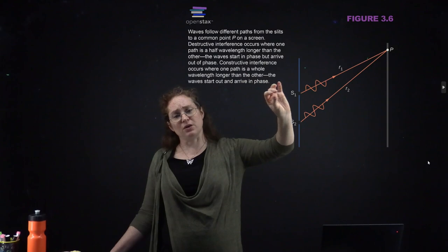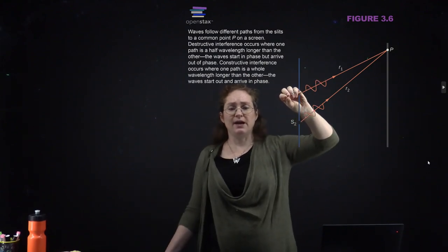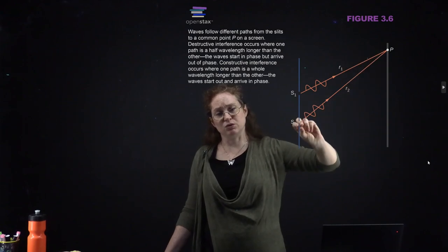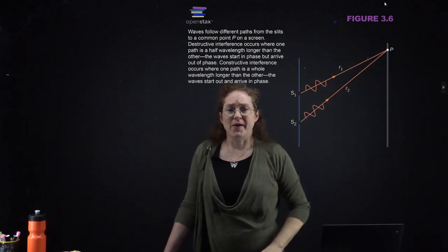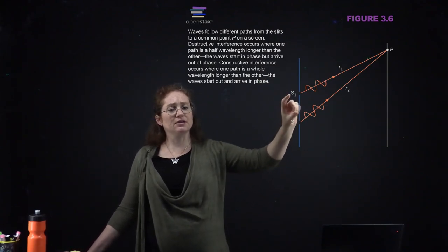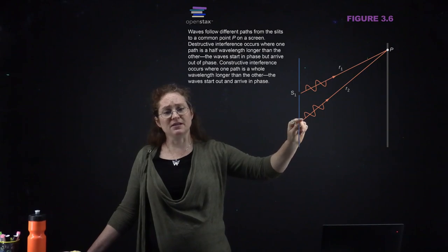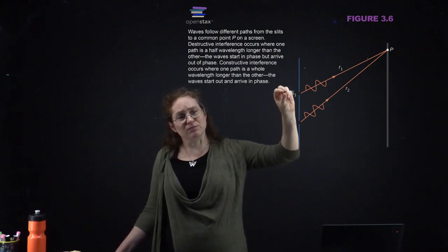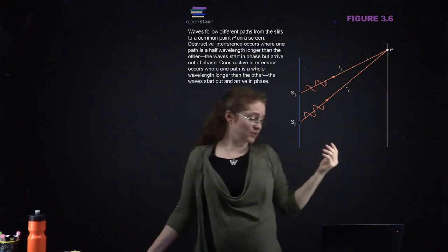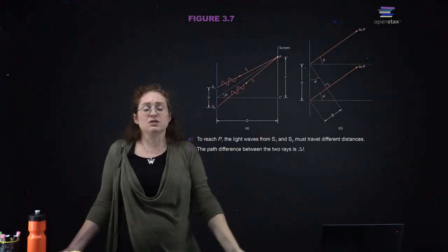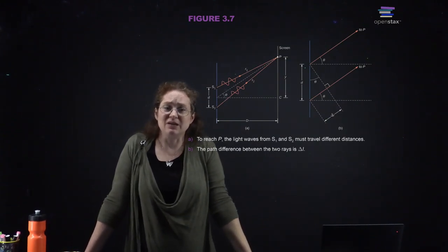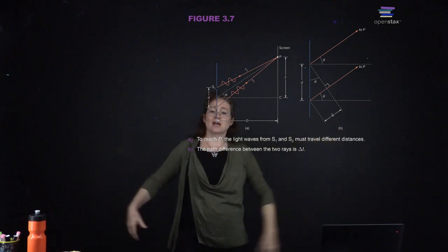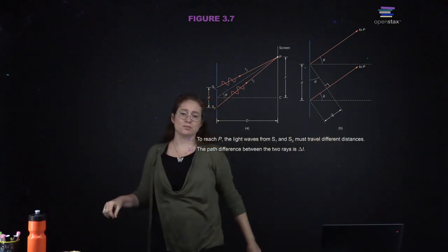We're going to use the ray picture of light, with a ray traveling from the slit to a point on the screen. The rays start in phase, but because there is a slight path difference — light from slit two travels slightly longer than from slit one — you have potential for constructive or destructive interference. We make the approximation that the screen is very far from the source compared to the separation between the slits.